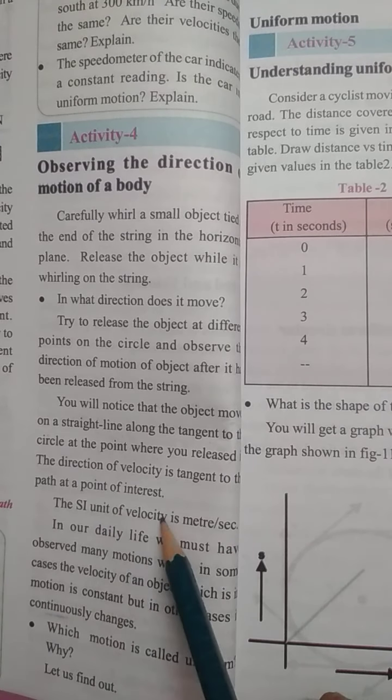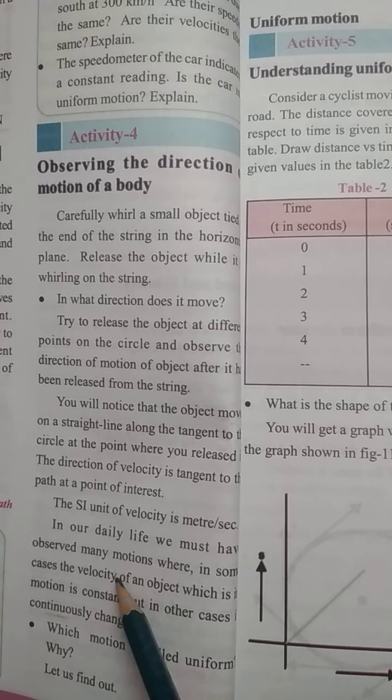The direction of velocity means tangent to the path at a point of interest. The SI unit of velocity is meters per second. In our daily life, we must have observed many motions where in some cases the velocity of an object which is in motion is constant, but in other cases it continuously changes.